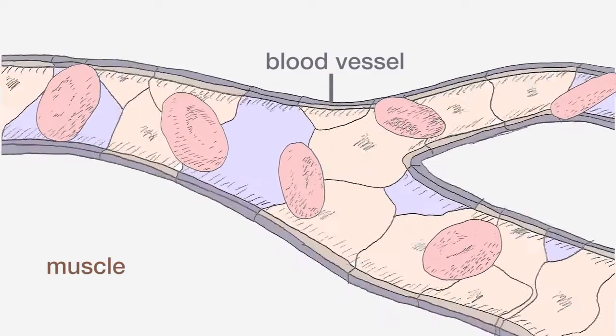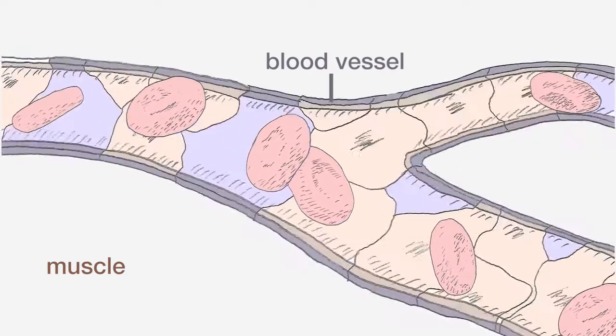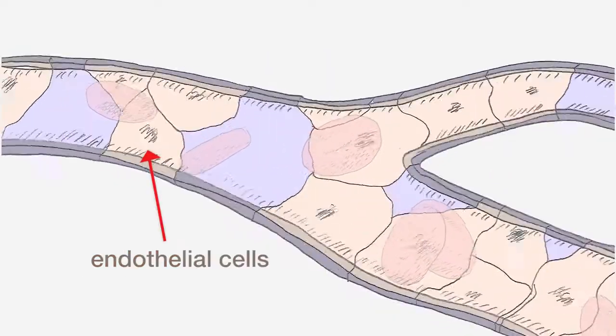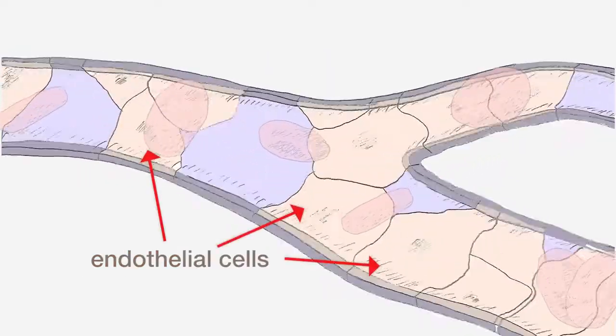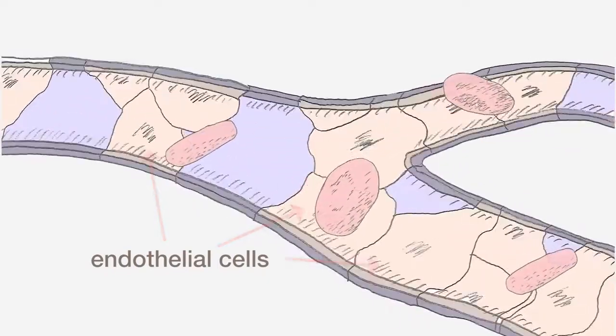The new study has unraveled the cascade of interactions between blood vessels and muscles. Endothelial cells, which line the walls of blood vessels, are essential for the health and growth of the vessels.